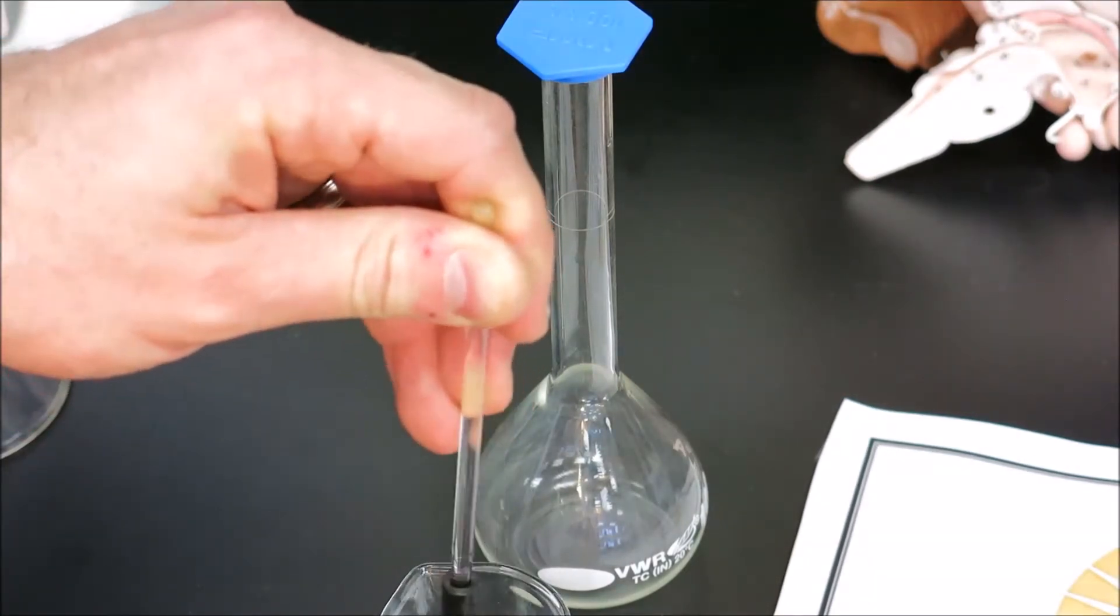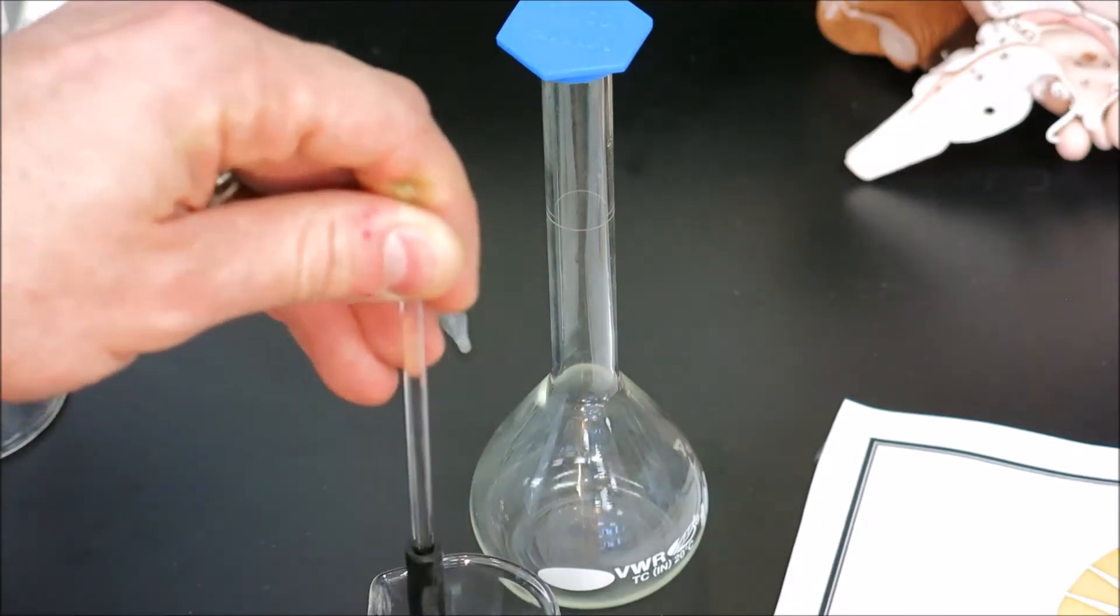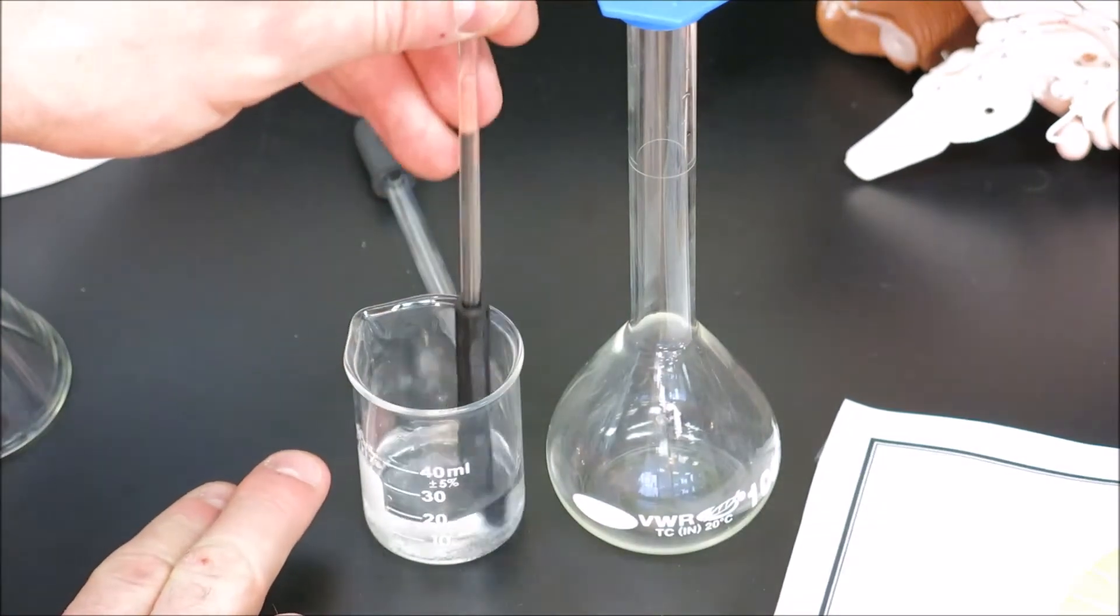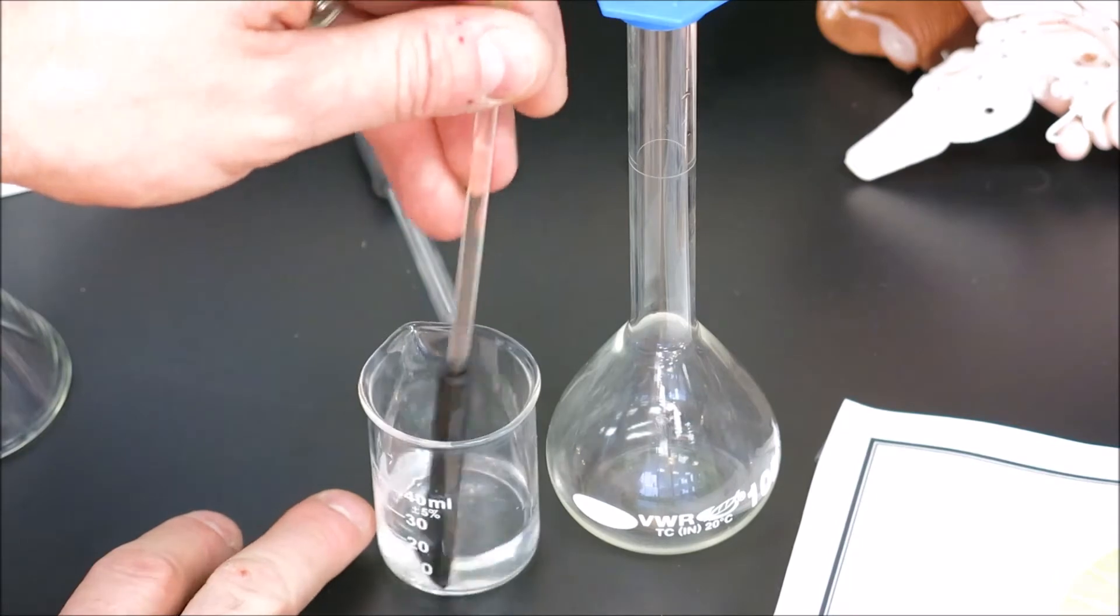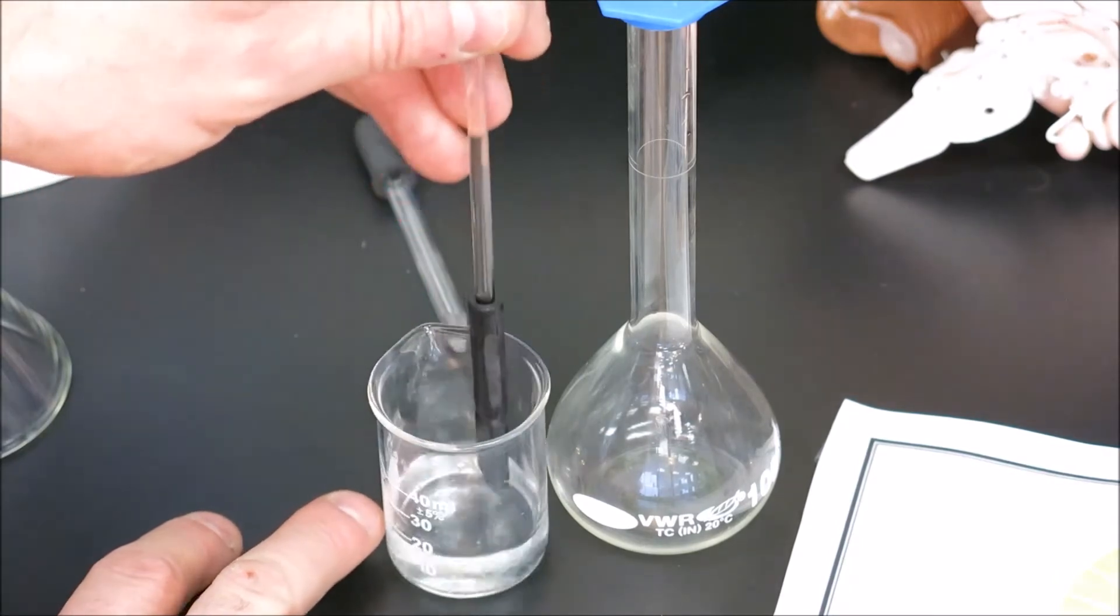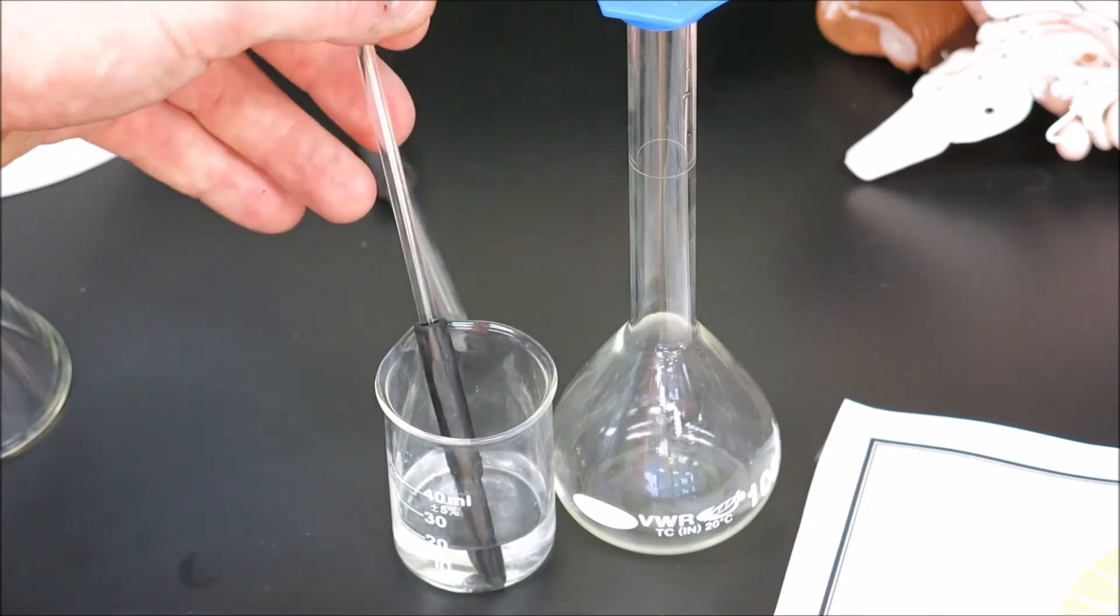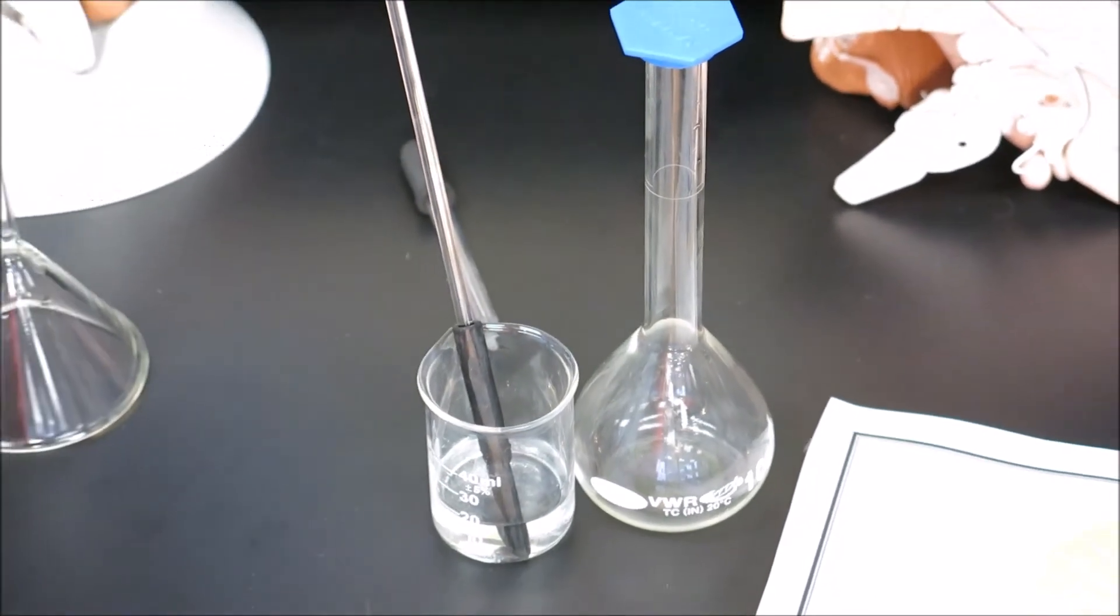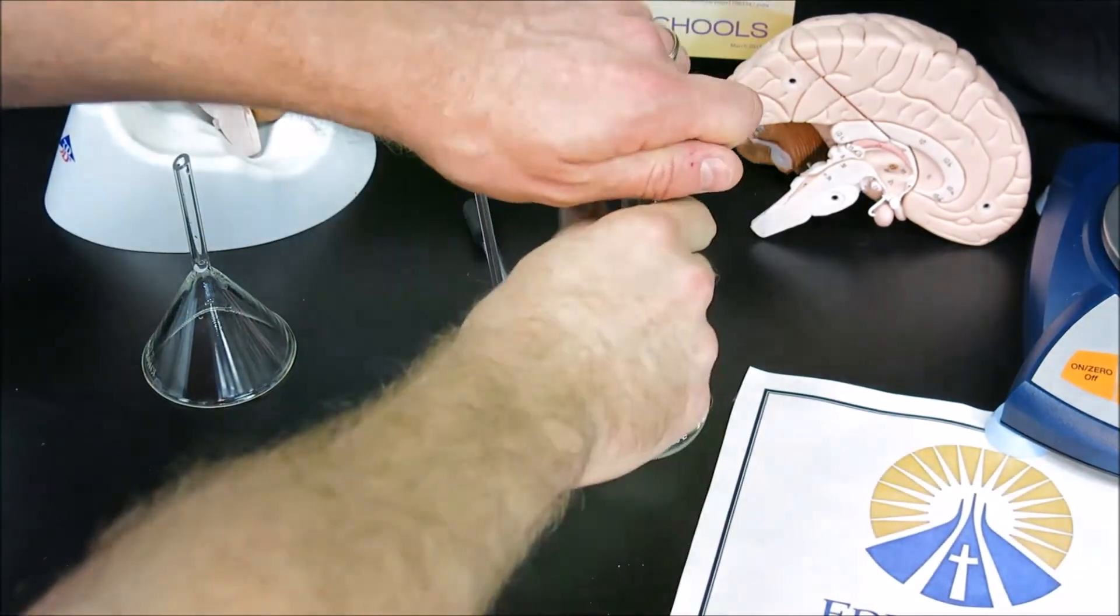So 20 mils is a good start, and we'll stir to try and dissolve the solid. The solid might not completely dissolve, and we'll do several rinses as it gets poured into the volumetric flask. Once we're ready to pour, we'll take the lid off the volumetric flask and place a funnel into the flask to help pour past the neck.